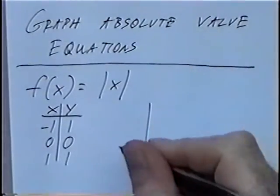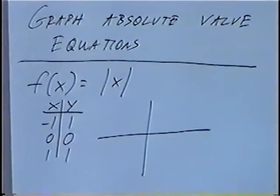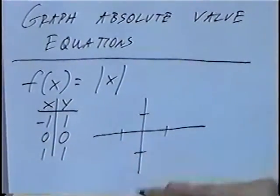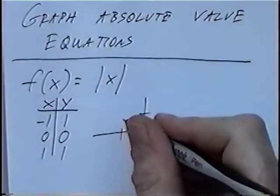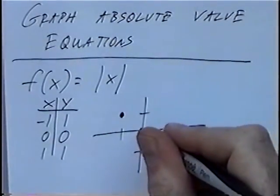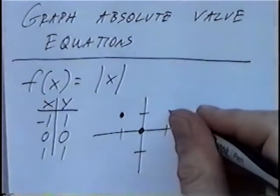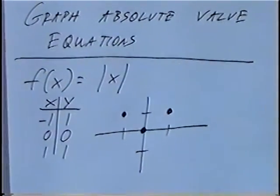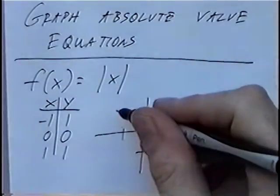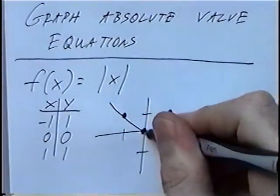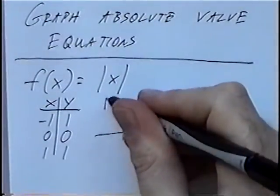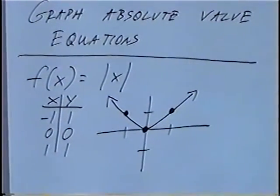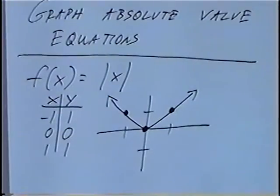Then, graphing these points on an xy-axis: negative 1, positive 1; 0, 0; and 1, 1. The three points line up to make a v-shape, and we will connect them to make a v-shape. Every Absolute Value equation that we graph will be a v-shape. And this will be the graph for the question.